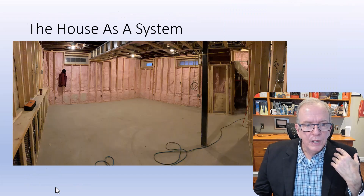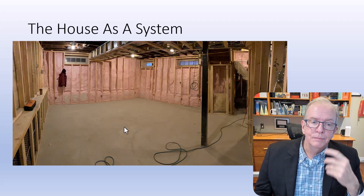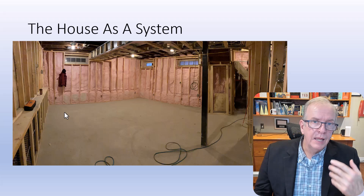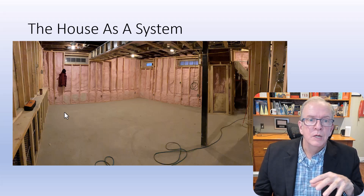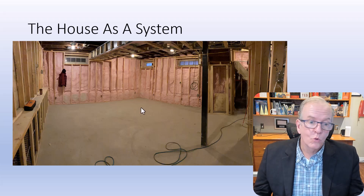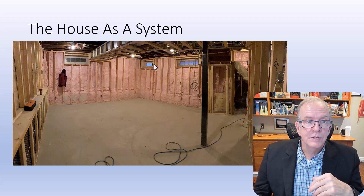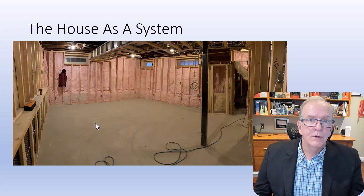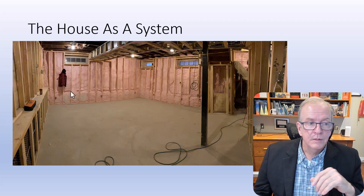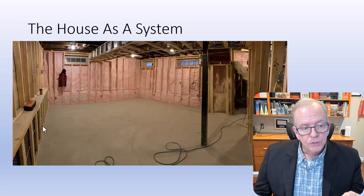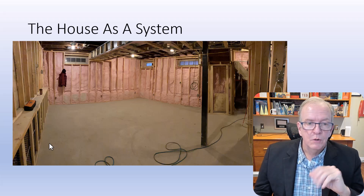We want to think about our buildings as a system and make sure everything is integrating well. In the foundation section, I talk about underpinning — how you underpin a house to lower the basement so you can have higher ceilings. In an old house, the ceiling might be six foot four or six foot five, and ductwork brings it even lower. We discuss the process of lowering the floor without the building collapsing. In the insulation section, we look at different types, including foam insulation sprayed on interior walls — this particular semi had an interesting underpinning situation.